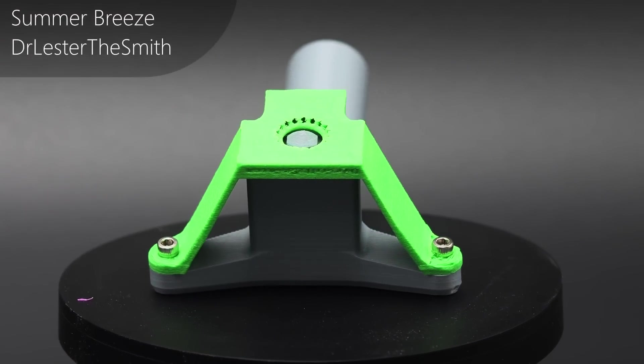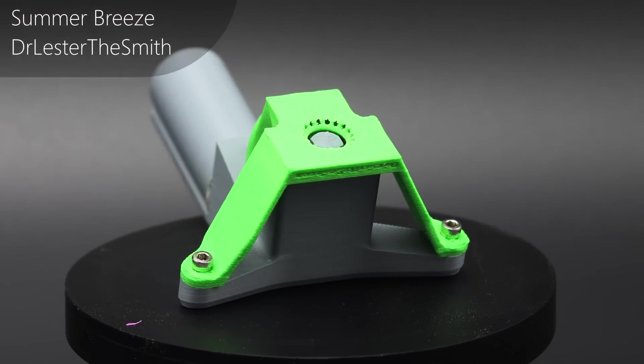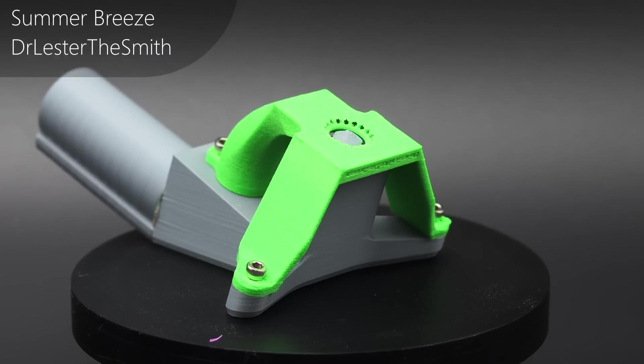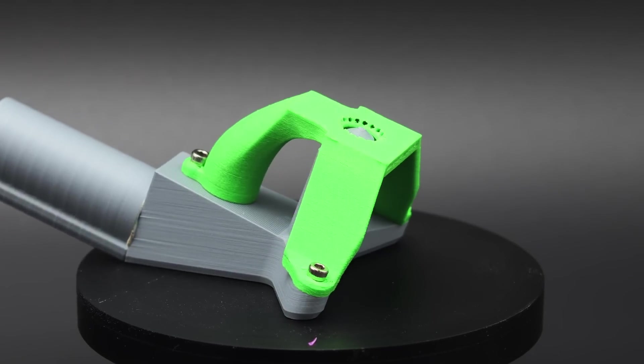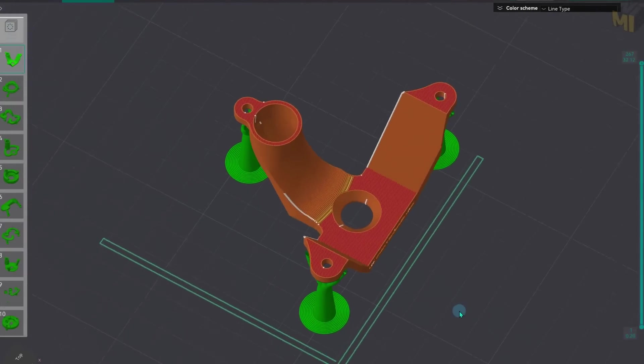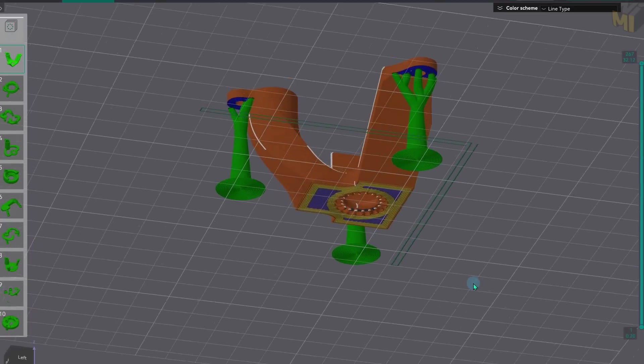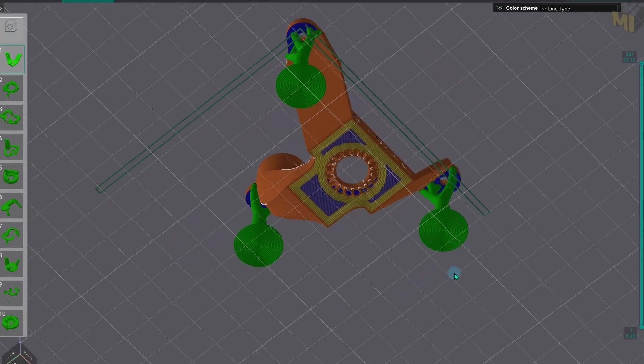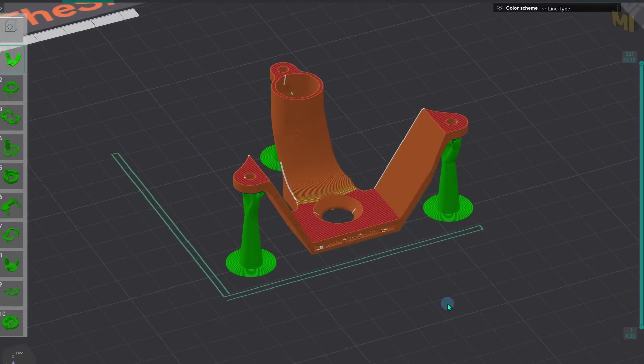Next up we have this little guy by Dr. Lester the Smith named Summer Breeze. This is a wraparound as well but it's a super low profile option which is easy to print, requires only a couple of supports and doesn't use much filament either. Dr. Lester submitted this immediately after I released the challenge so he has been very patient.